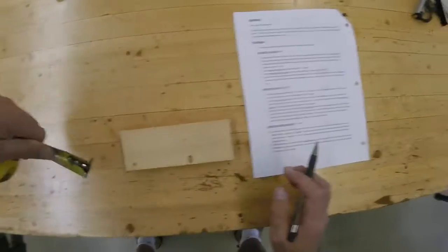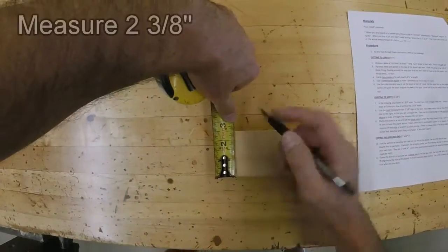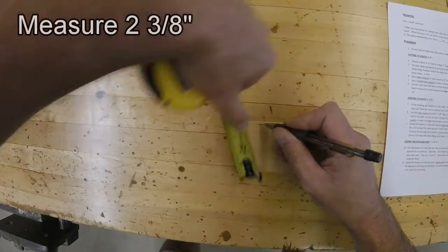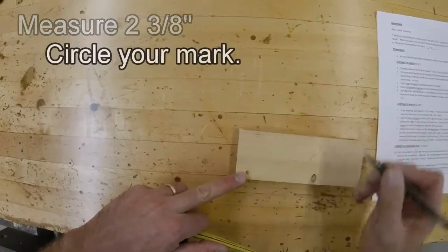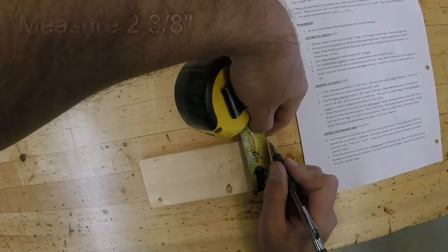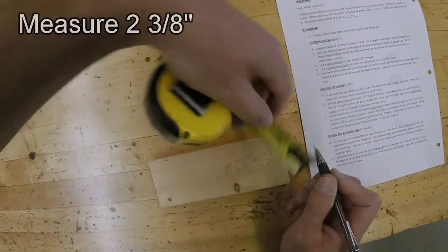That's a lot to digest. So, on the left of the board, I'm going to measure up two and three-eighths and make a mark. And I'm going to circle my mark so I don't lose it. I'm going to do the same thing on this side. I'm going to measure up two and three-eighths.